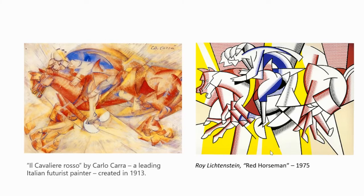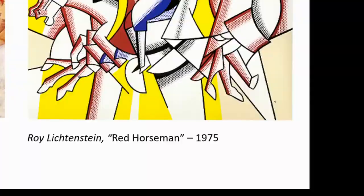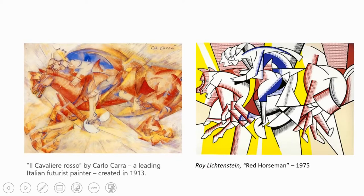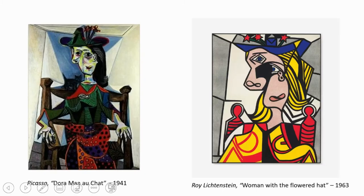He also appropriated quite a few early to mid-20th century artists. This is Carlo Carrà's Italian Futurist painting Il Caballero Rosso — loosely translated as The Red Horseman — and this is Lichtenstein's version of it from 1975, again with Benday dots. This is one of the few times he actually did a gradation of dots, which he didn't normally do.